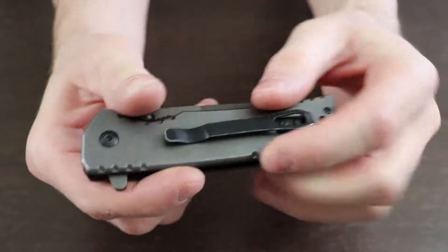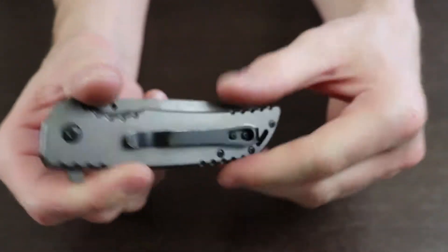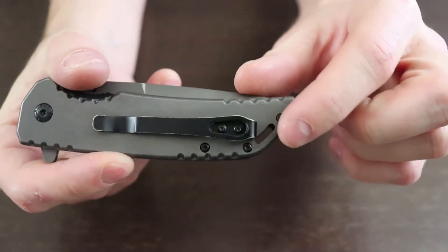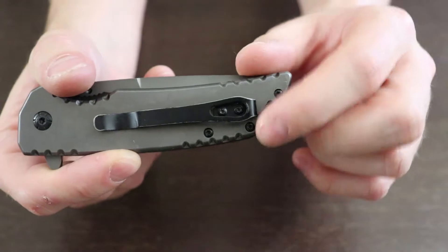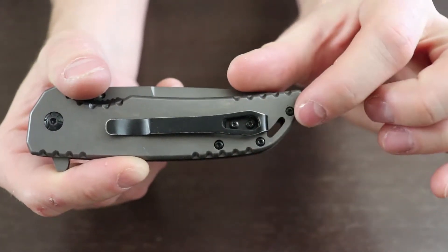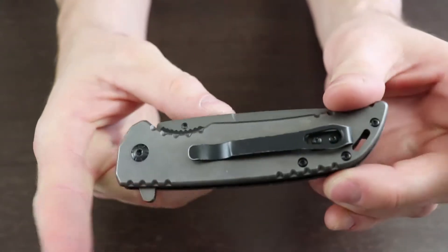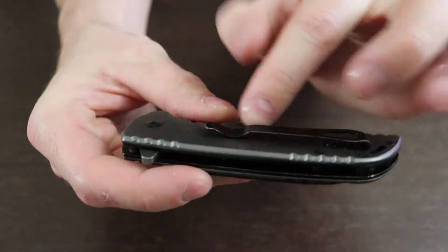Nice little belt clip on the back, seems to be pretty beefy. It doesn't sit up too high past this. I would have actually 86'd the lanyard hole to move that belt clip up just a little bit because you're going to have about that much sticking out of your pocket.